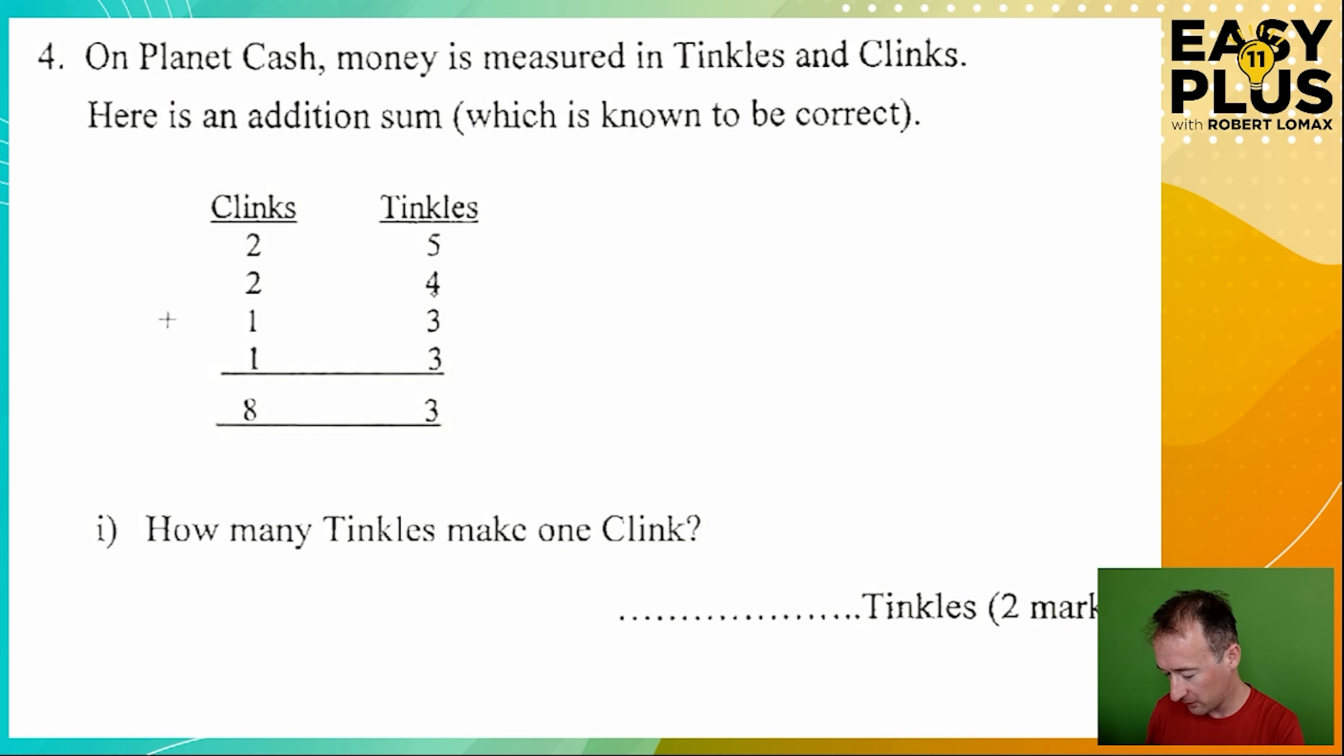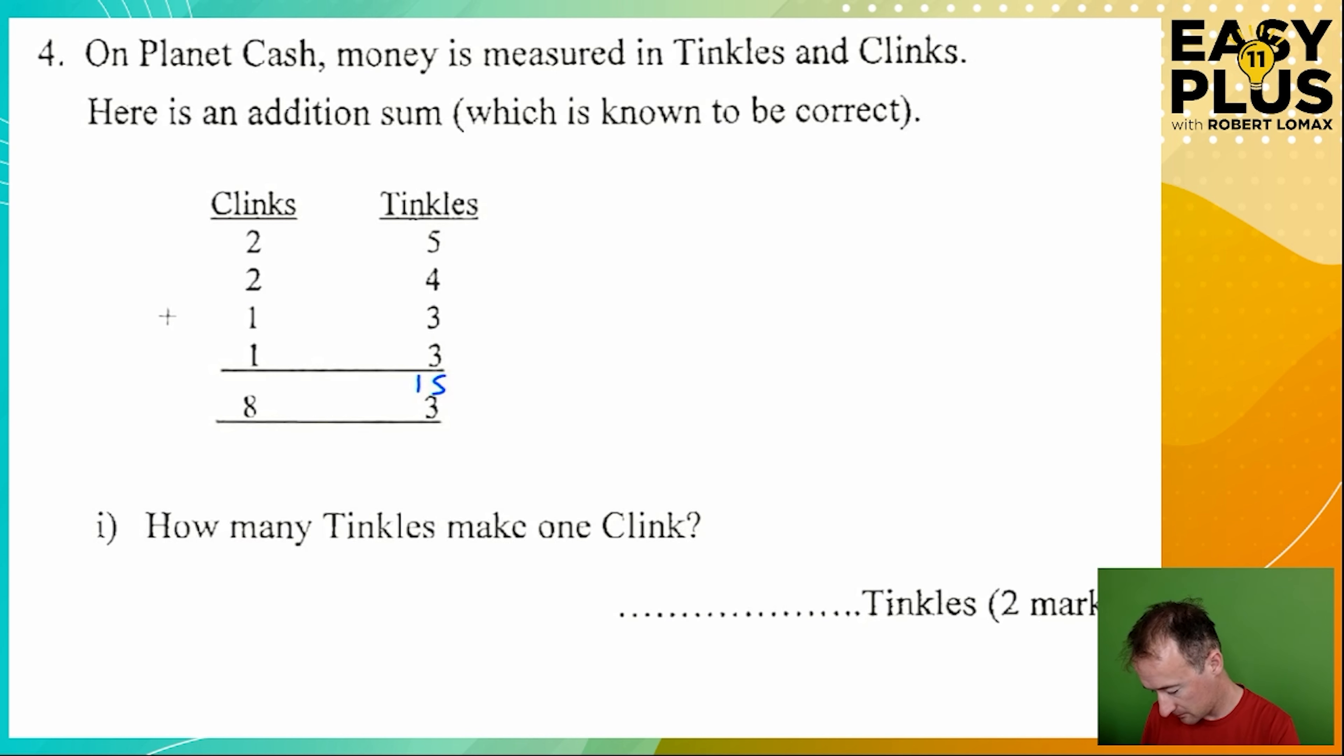We can see that 5 plus 4 plus 3 plus 3 tinkles leave us with 3 tinkles at the bottom. Well, 5 plus 4 is 9, plus 3 is 12, plus 3 is 15. So how can that give 3? This must mean that 12 tinkles were carried into the next column. And we can see that the number of clinks here add up to 6. Yet we have 8 down here, and the difference between 6 and 8 is 2.